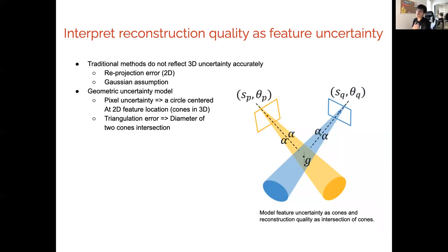Therefore, we propose a geometric uncertainty model which truly reflects the actual uncertainty of a point in 3D, where pixel uncertainty represented as a disk centered around its particular 2D feature is extracted in 3D and made into a cone. The triangulation error is simply the diameter of the two cones intersection.